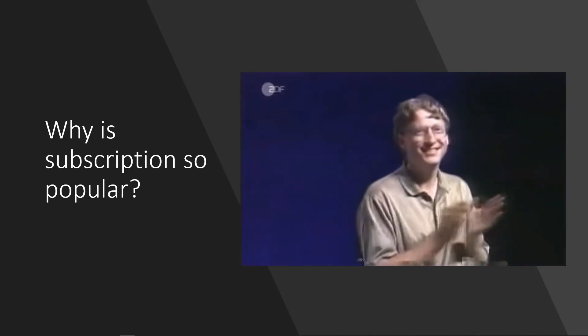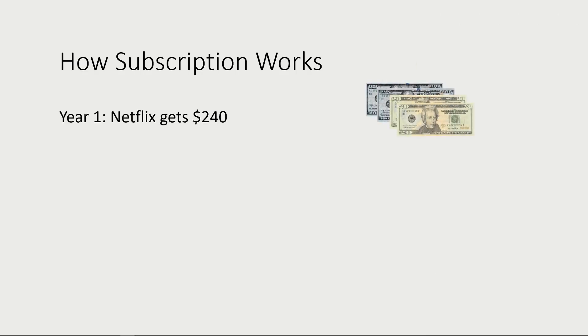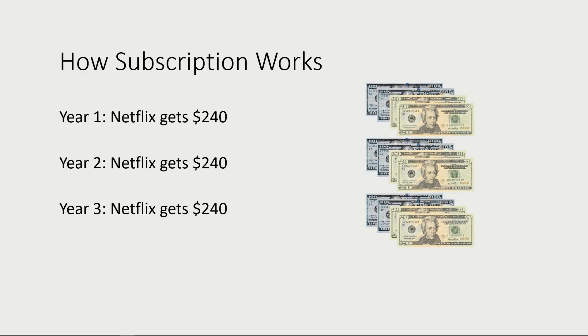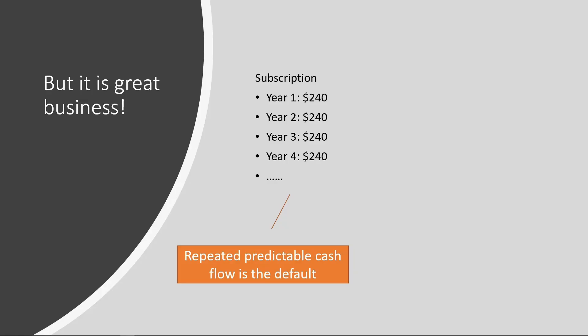To answer why subscription is so popular, let's look at how it works. A Netflix premium customer pays $19.99 a month — roughly $20 — so that's $240 a year. In the first year the customer pays $240, again in the second year, the third year, the fourth year, and it goes on. In a subscription-based model we have a revenue stream that comes in predictably at $240 a year — repeated, predictable cash flow.